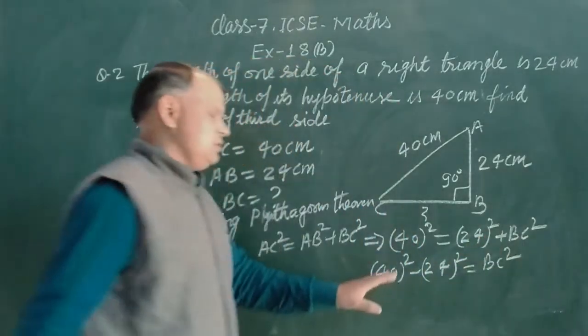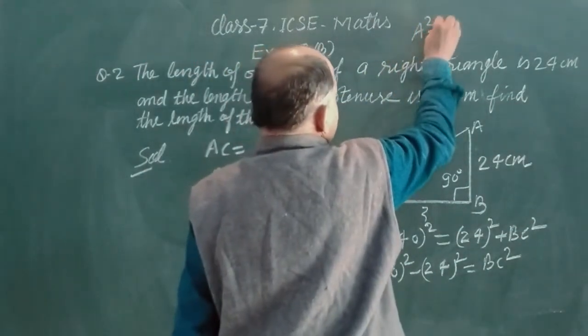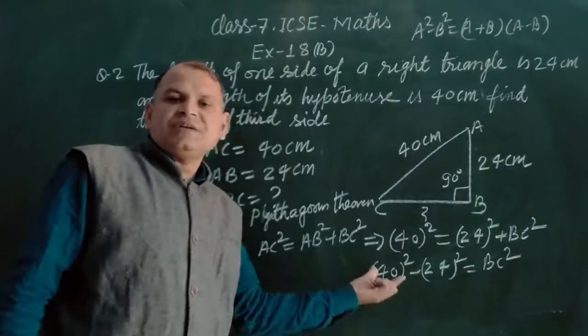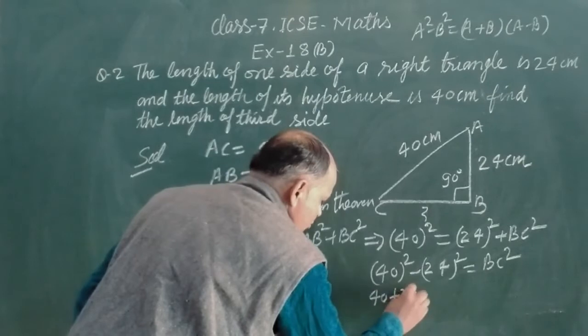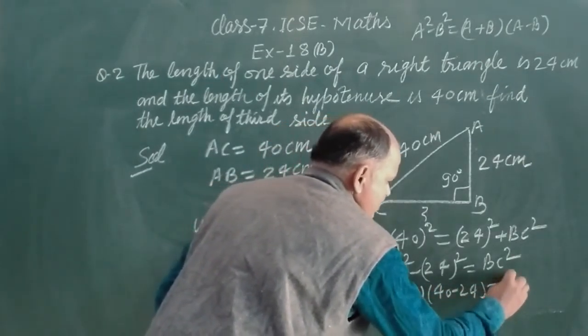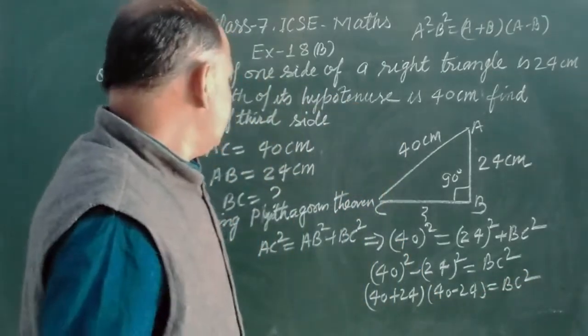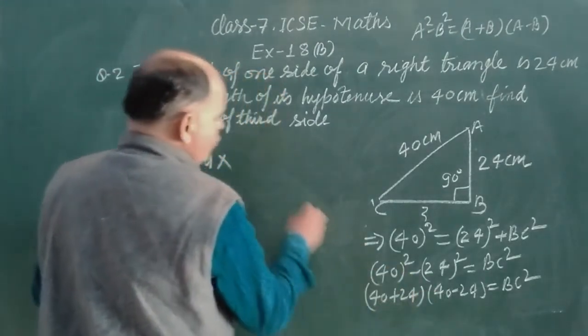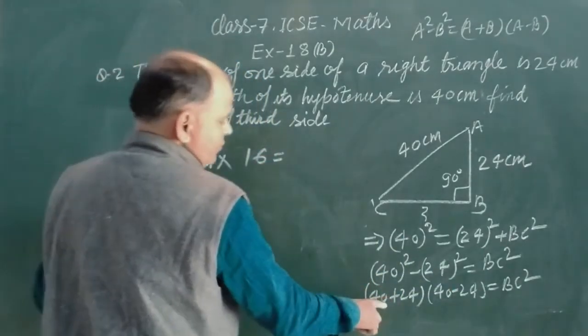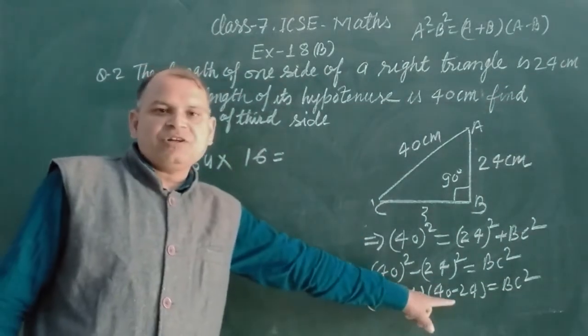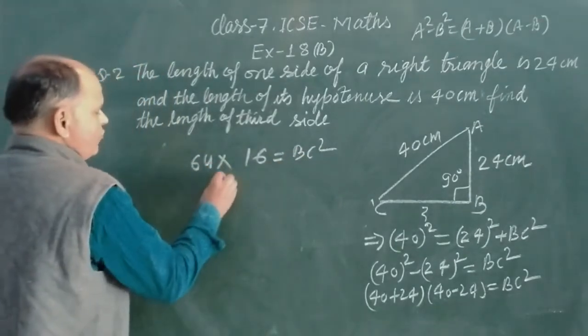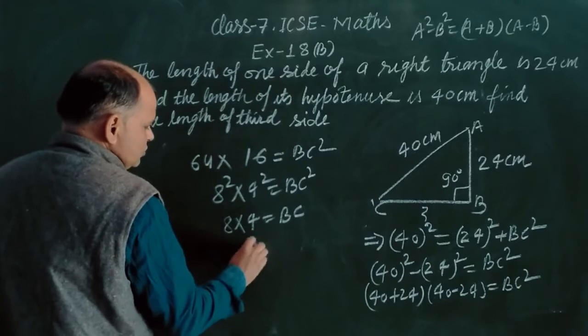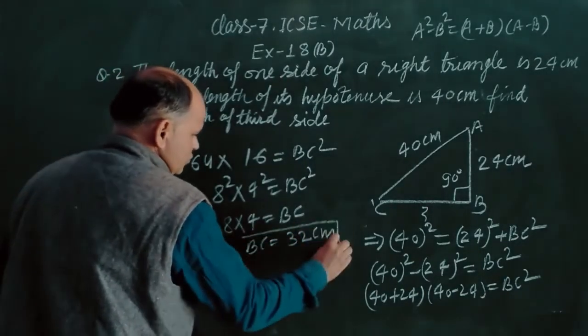Bring 24 square towards 40 square, so this is 40 square minus 24 square equal to BC square. We use A square minus B square here. This is A square minus B square equal to A plus B times A minus B. So 40 plus 24 times 40 minus 24 equals 64 times 16 equal to BC square. So BC equal to 8 times 4, so BC equal to 32 cm. So this is the answer.